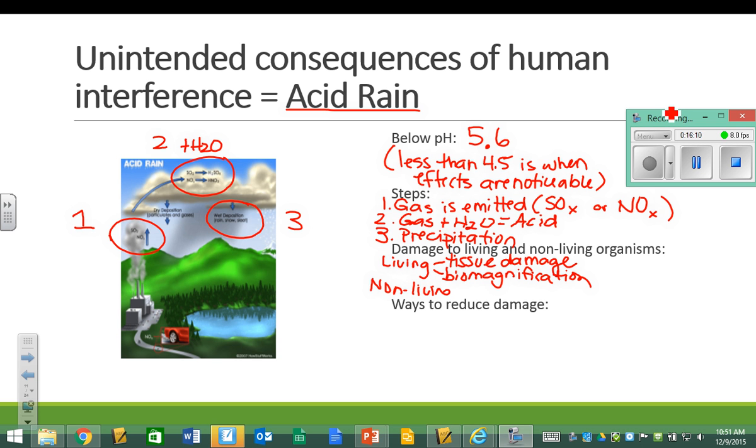For non-living organisms, I would say corrosion is the thing I would put at the top of my list because corrosion could lead to so many other things. Acids will corrode substances. They will corrode metals and rocks.